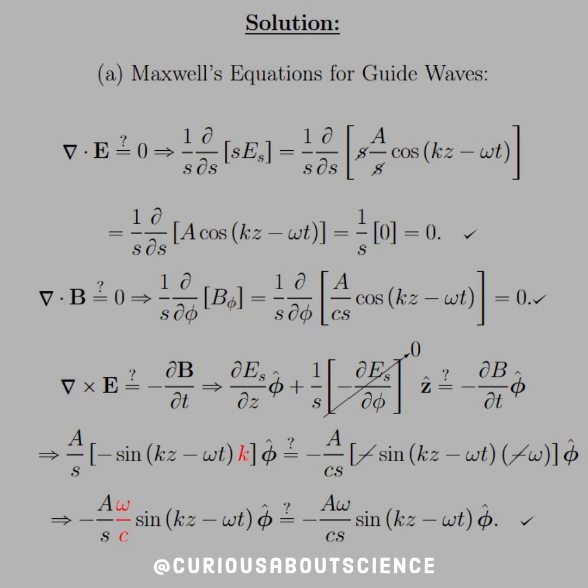What about the divergence of B? Okay, well, that's 1 over s, d by d phi of B of phi. Okay, so, let's plug everything in.